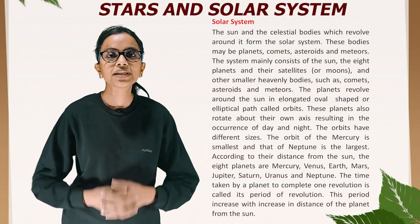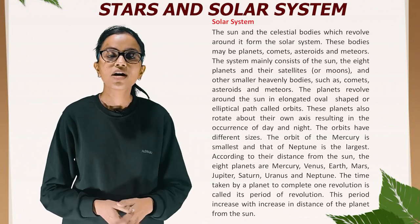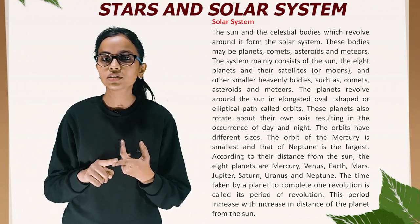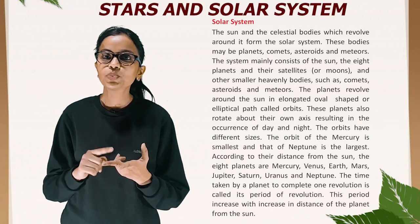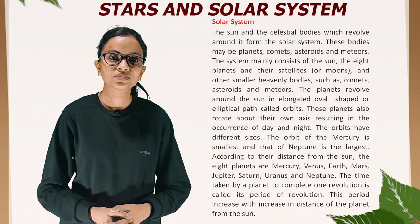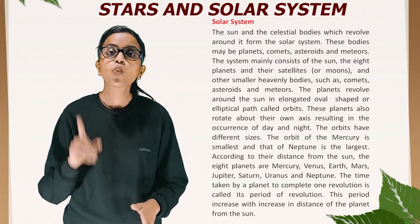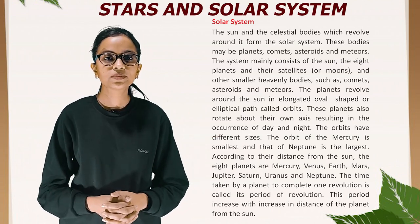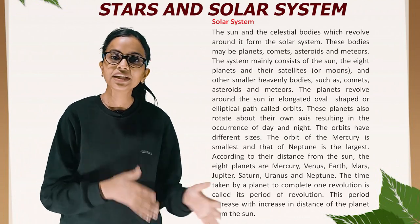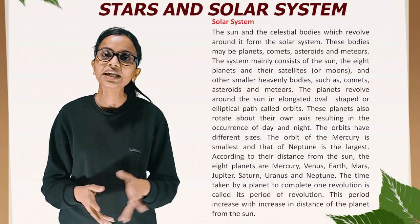According to their distance from the Sun, the eight planets are Mercury, Venus, Earth, Mars, Jupiter, Saturn, Uranus, and Neptune. The time taken by a planet to complete one revolution is called its period of revolution, and this period increases with increasing distance of the planet from the Sun.